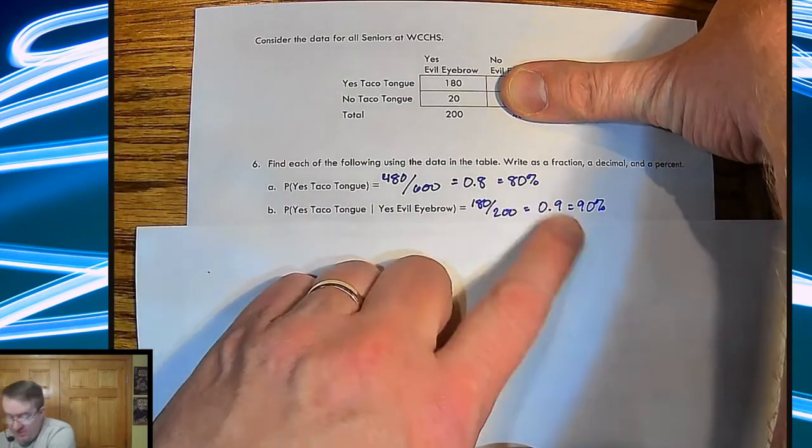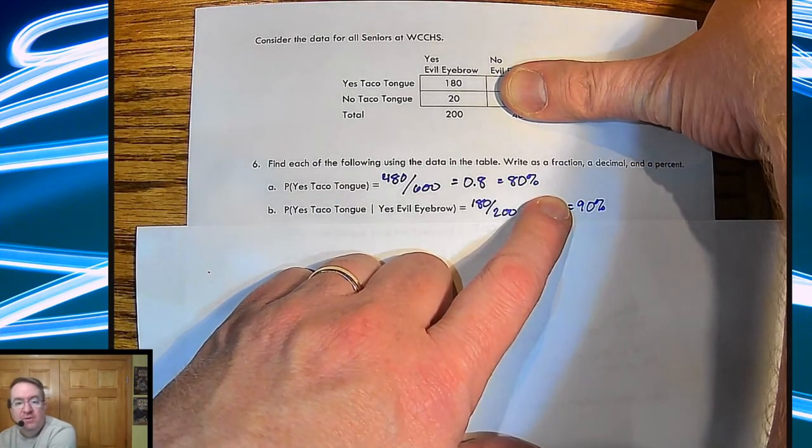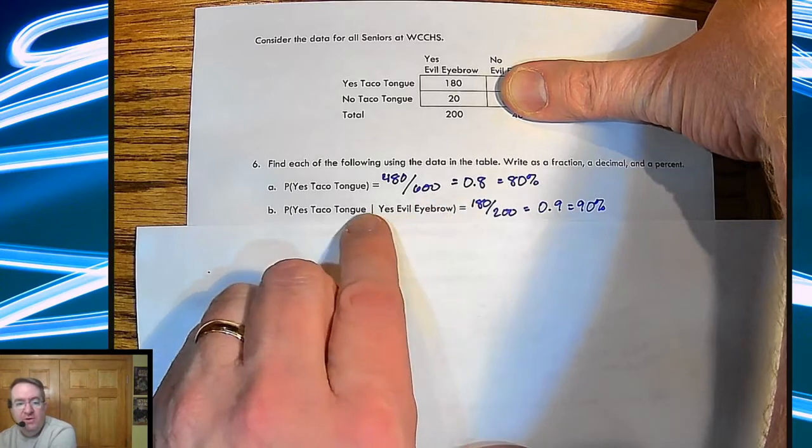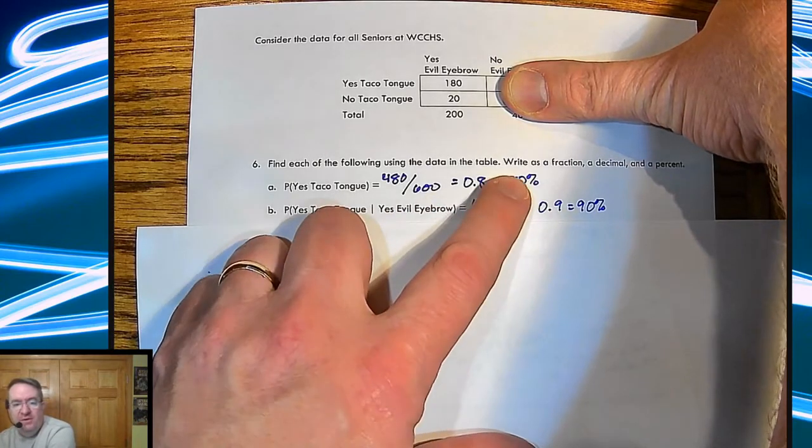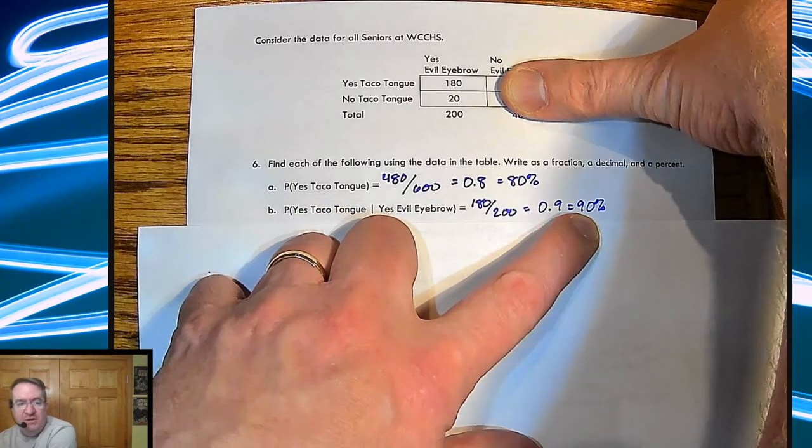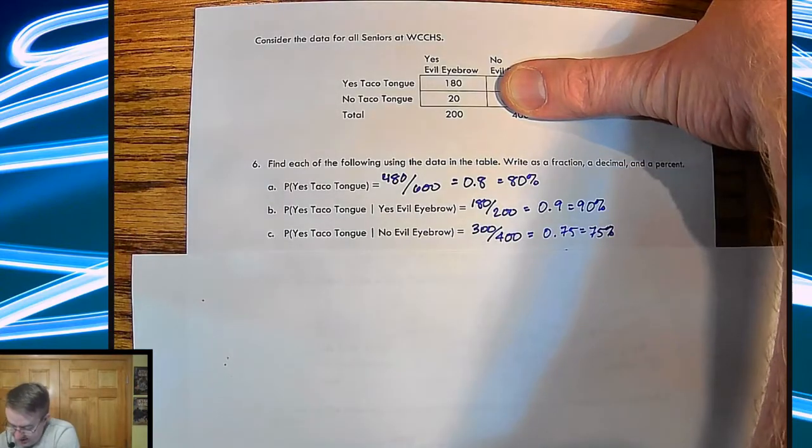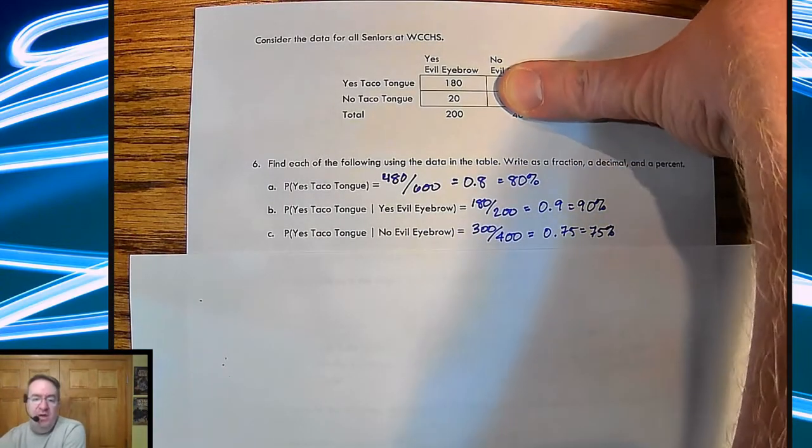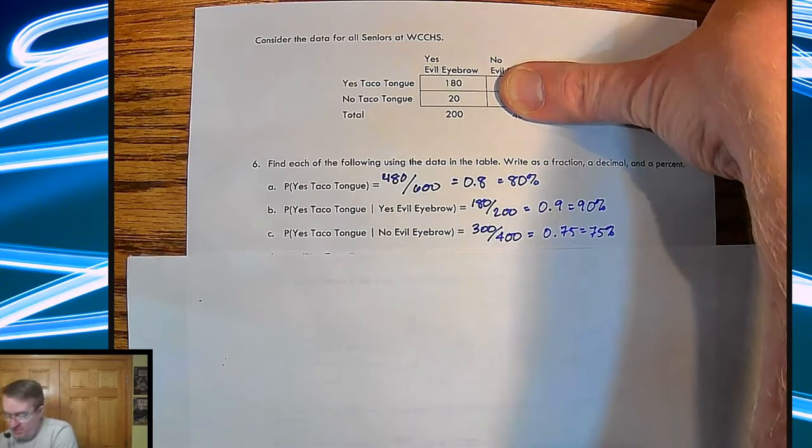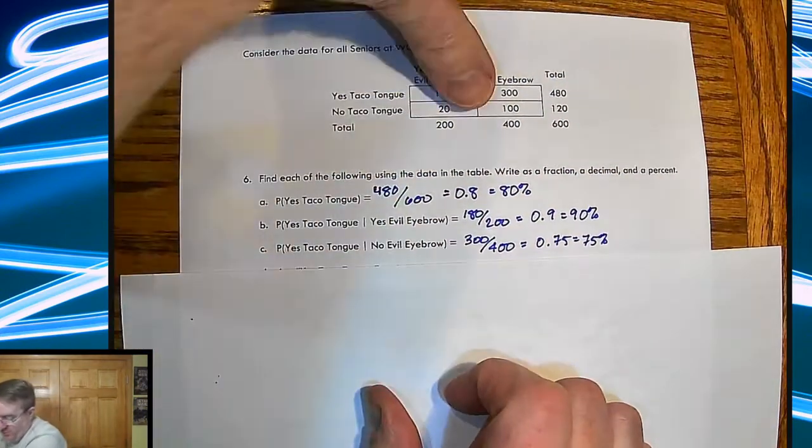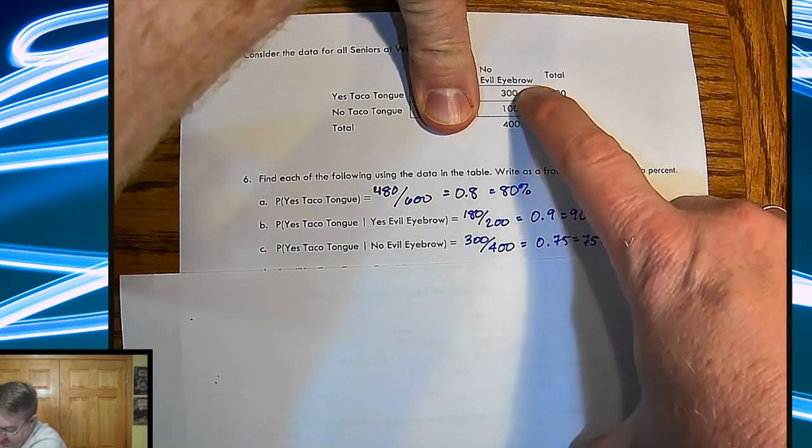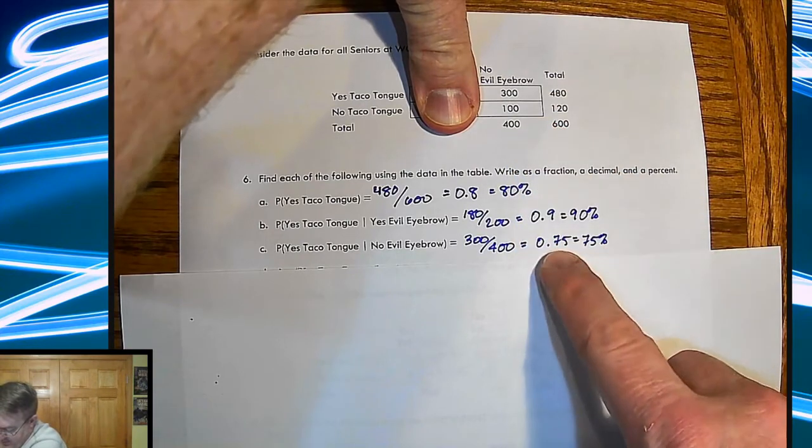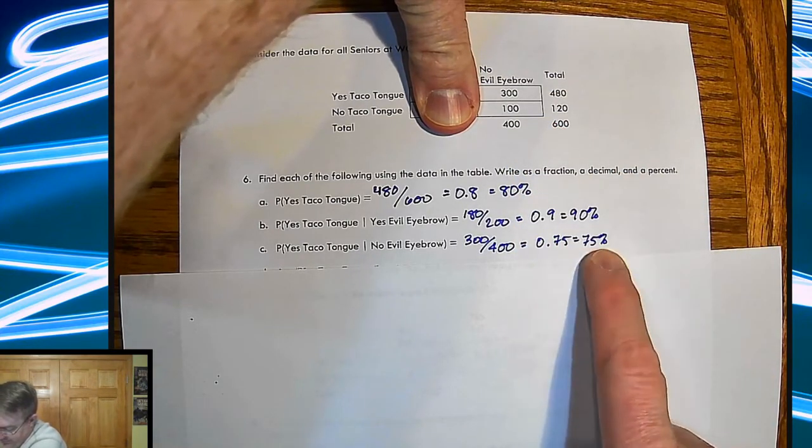So already we know this is not independent. Because here we don't know if something's going on or not. That's 80%. This should be 80% if it's independent. Just to be safe, we're going to go do the other one. What's the probability of taco tongue if there is no evil eyebrow? So now we're over here. Taco tongue, no evil eyebrow, 75%.